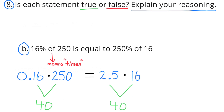B: 16% of 250 equals 250% of 16. The word 'of' means times. 16% of 250 is 16 hundredths times 250, which equals 40. 250% of 16 is 2 and 5 tenths times 16, which also equals 40. So this statement is true. Note: 16% is written as 16 hundredths, and 250% is 250 over 100, which equals 2 and 5 tenths.